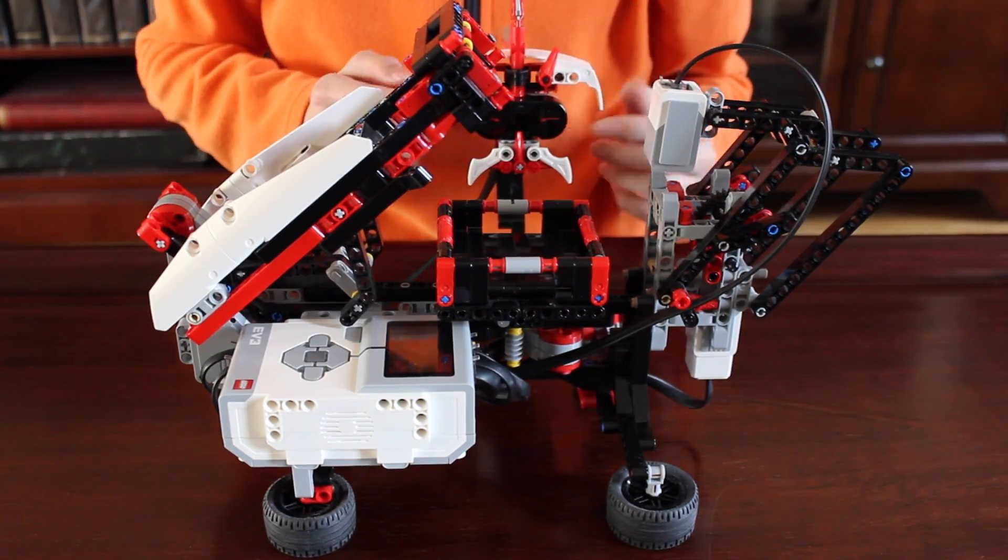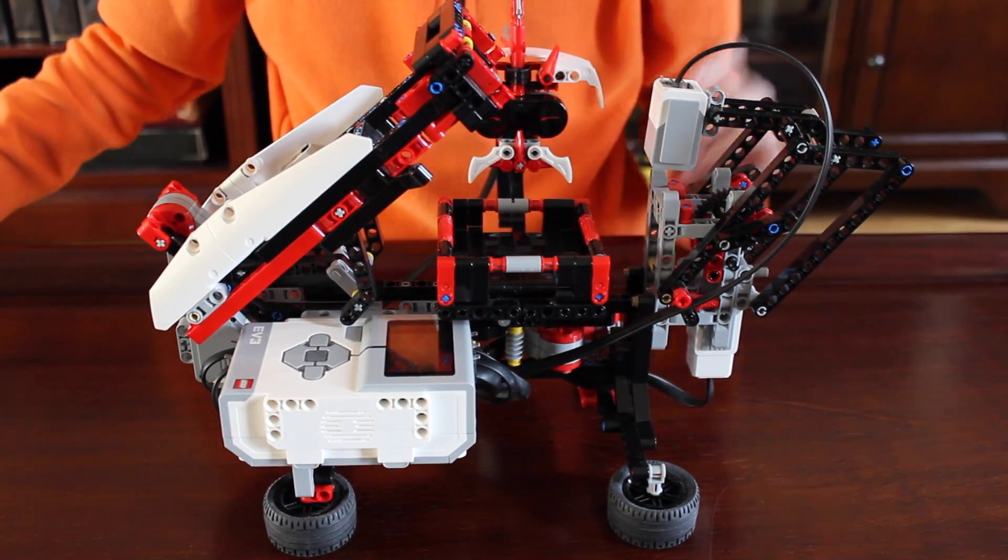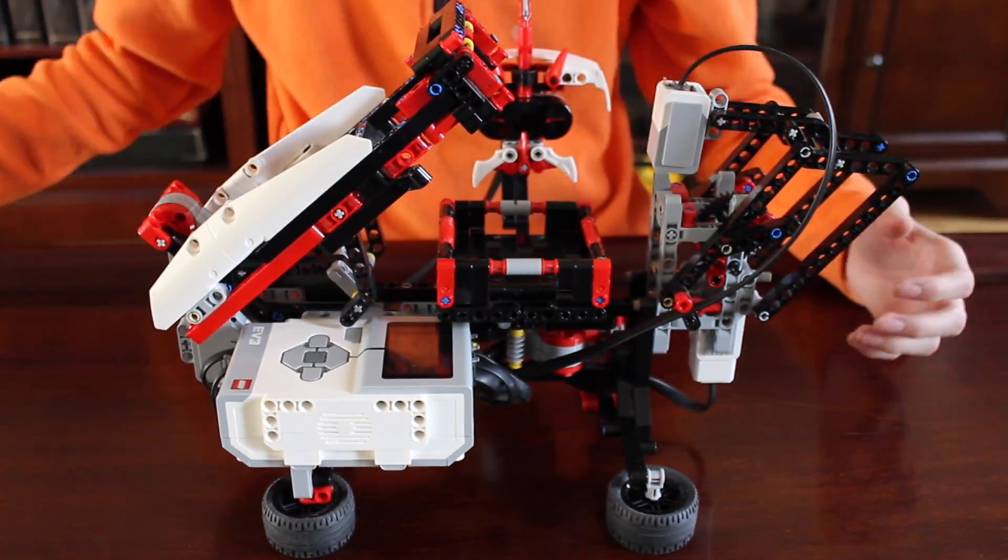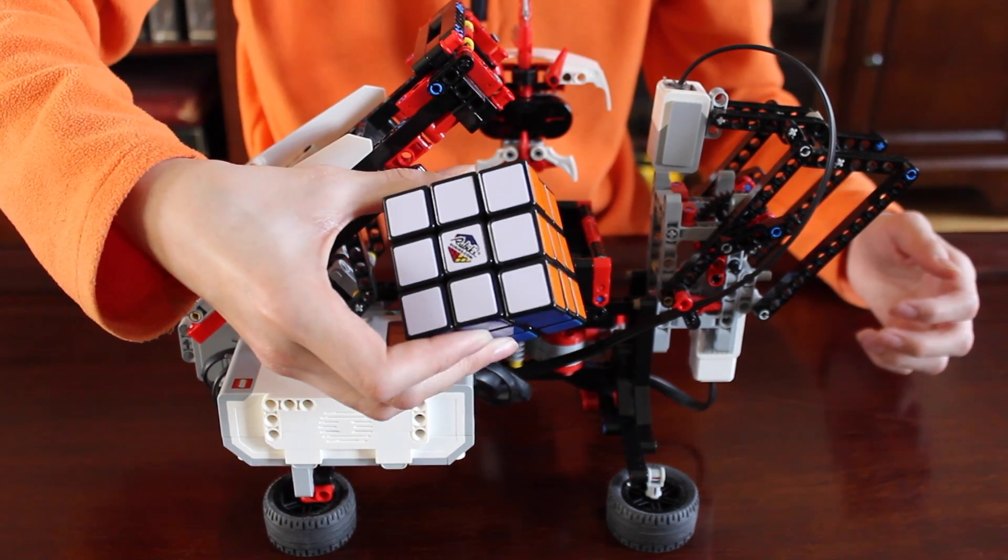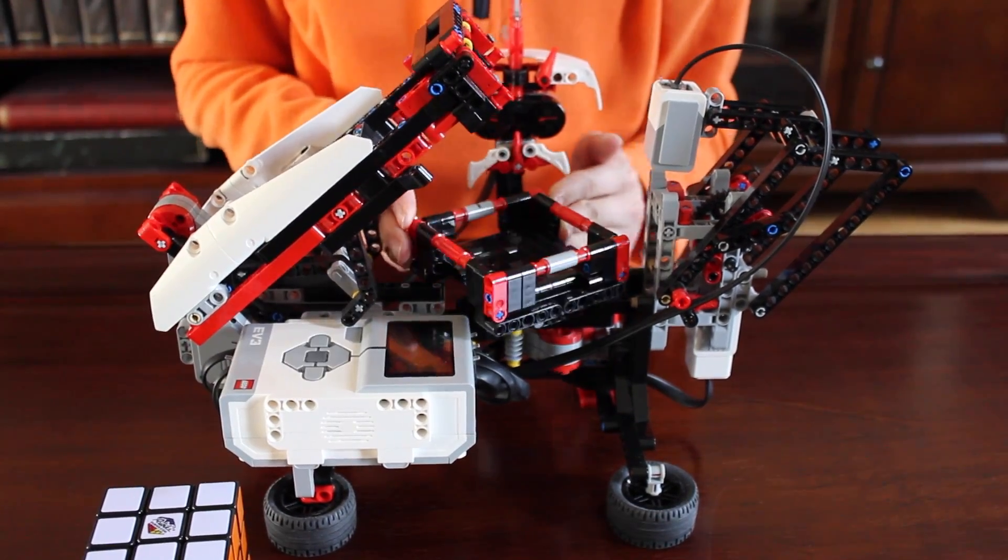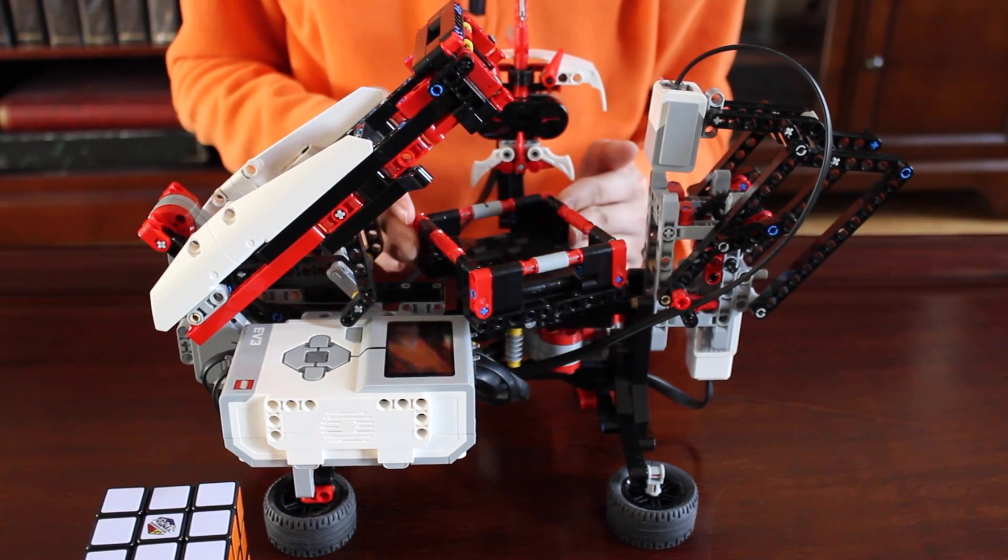As you can see, here's the EV3's eye that senses if the Rubik's Cube is there. Here's the EV3 color sensor, which senses the colors on the Rubik's Cube to calculate a formula. And here's the Rubik's Cube's platform, and it rotates.